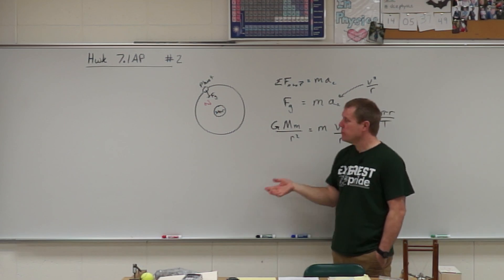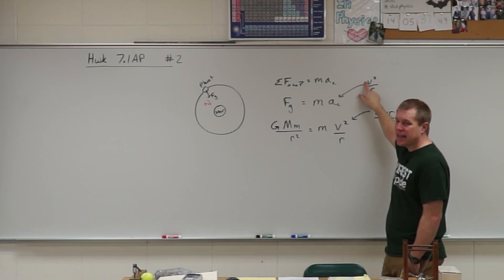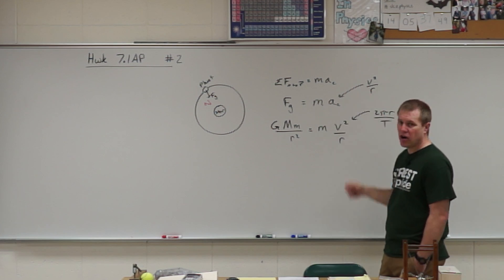Since it is circular orbit we can go ahead and make that substitution that ac is v squared over r.